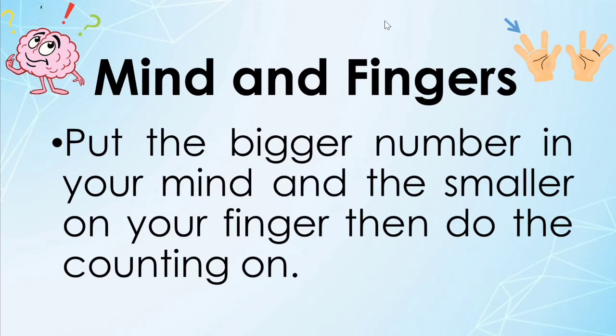The second way of adding numbers is called mind and fingers. How do we do it? We put the bigger number in your mind and the smaller on your finger. Then do the counting on.